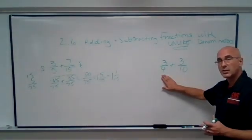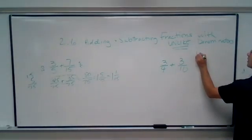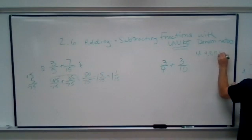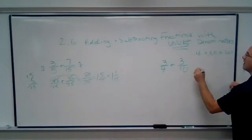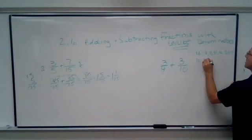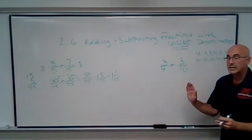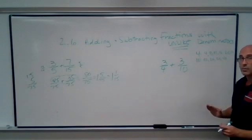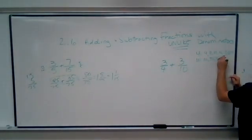What we're first going to do is start listing our multiples of each of our denominators. So for four, we have four, eight, 12, 16, 20, 24. And then for 10, we have 10, 20, 30, 40. Then we're going to look to see where the first common number occurs. And it occurs when we got to 20 on each of them.